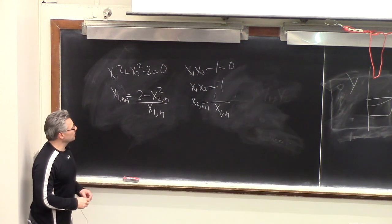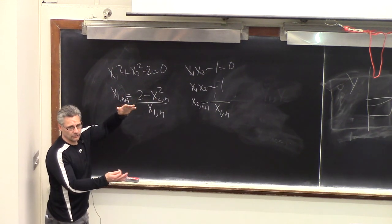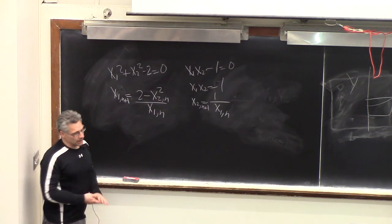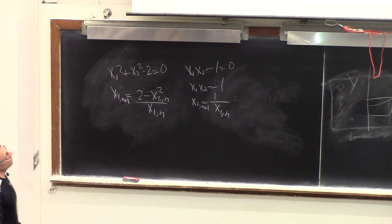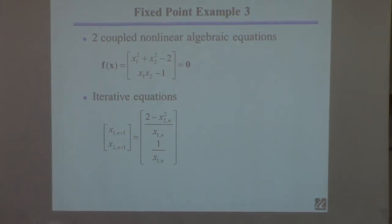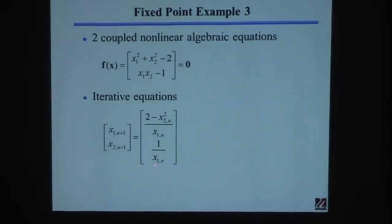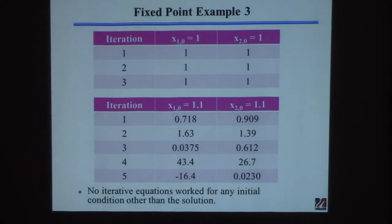To get this algorithm started I have to guess x1 and x2 — a vector of two initial values. This becomes quite a problem if the system is large; I've solved problems with 10,000 equations and you have to guess 10,000 values. If I guess x1 at zero and x2 at zero, I can get this started.